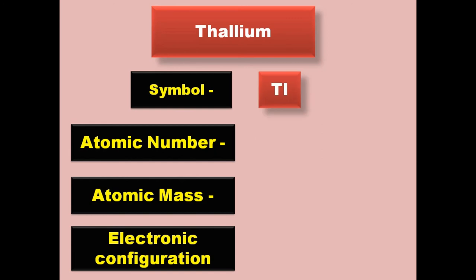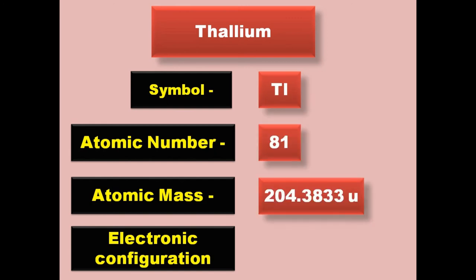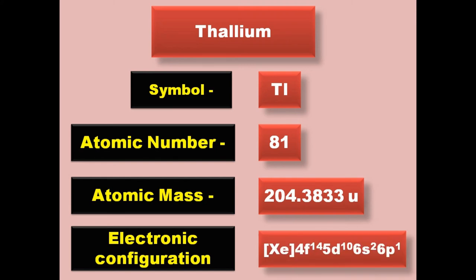Thallium has symbol Tl, atomic number 81, atomic mass 204.3833, electronic configuration [Xe] 4f14 5d10 6s2 6p1. Thallium is a post-transition metal and exists in solid form at room temperature.